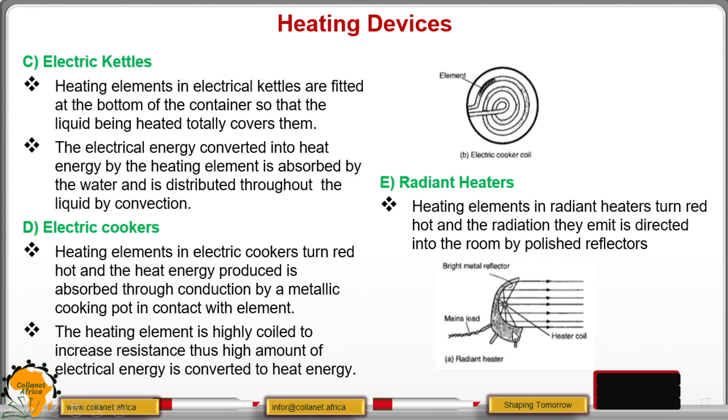And now, we have the heating element that we are saying that it is becoming red hot. And when it becomes red hot, it produces radiations that are now directed to the room by these polished reflectors. That way, you find that now your room will become hot or warmer.